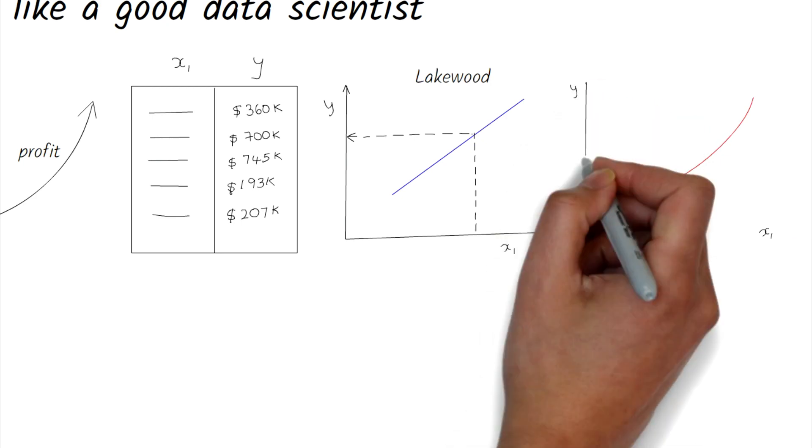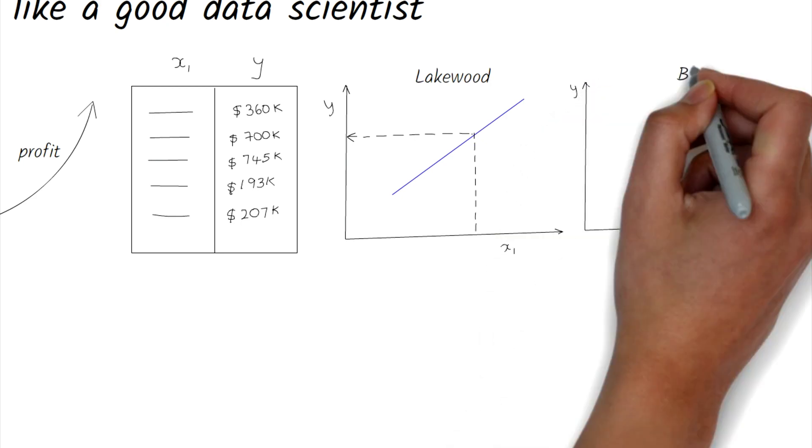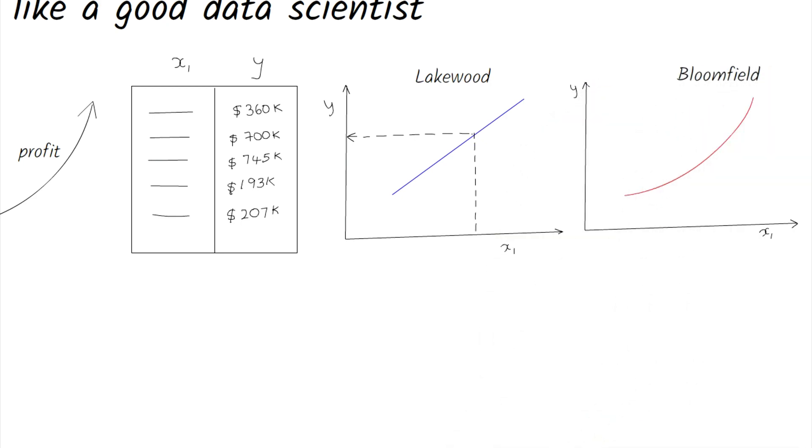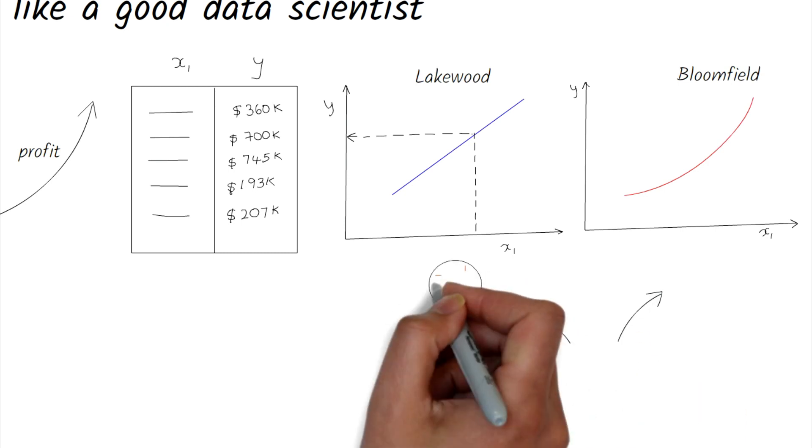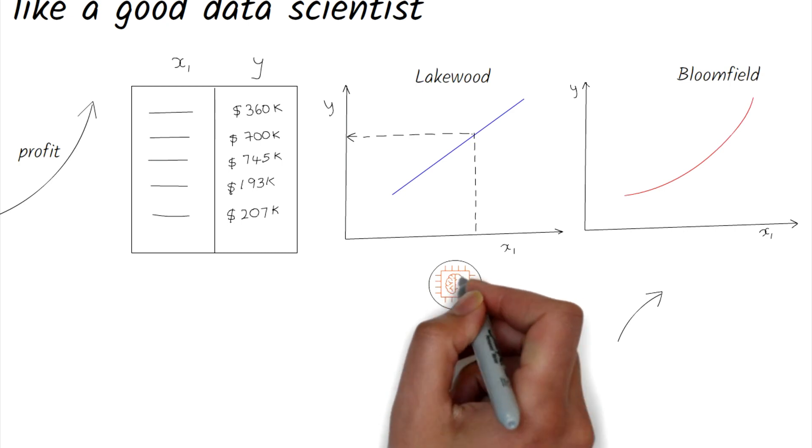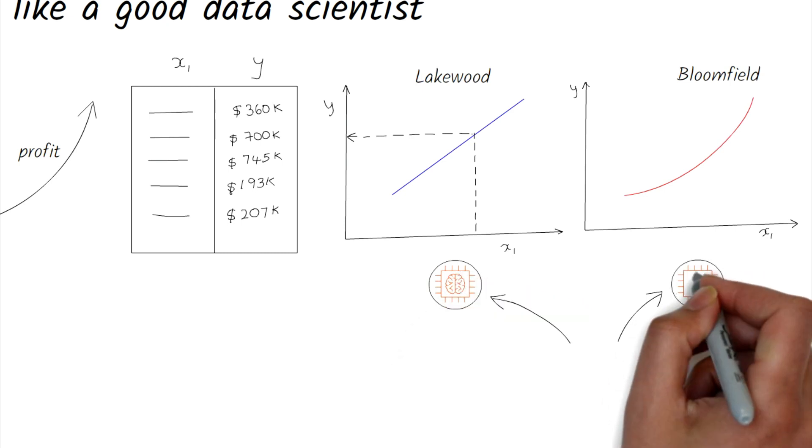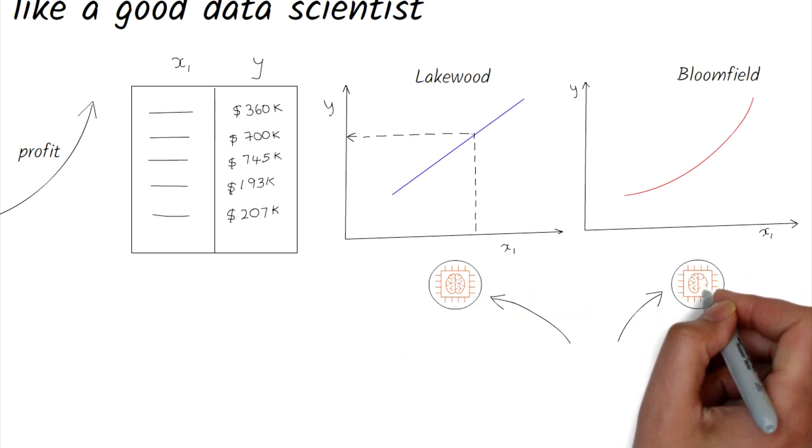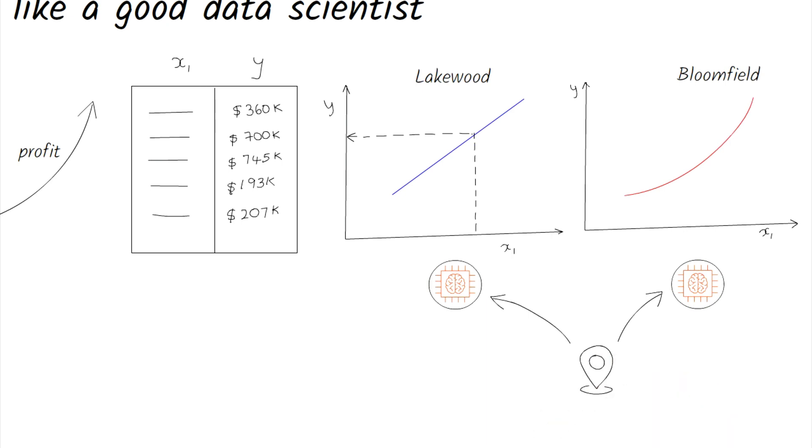In a different town, say Bloomfield, house prices by square footage is not so linear and it may look something like this. If your focus is only on these two towns, you could easily create two models for pricing: one for the town of Lakewood and another for Bloomfield. Depending on where the house is located, you would pick the right model to use for your prediction.